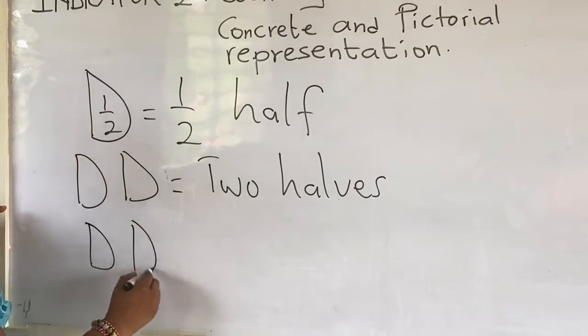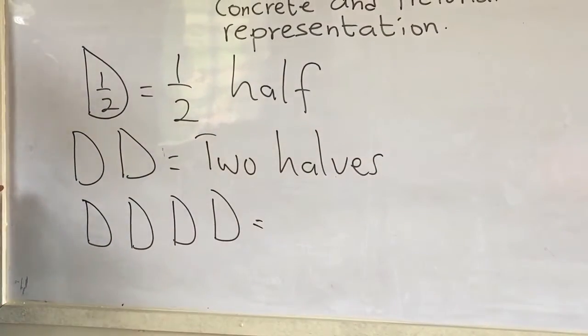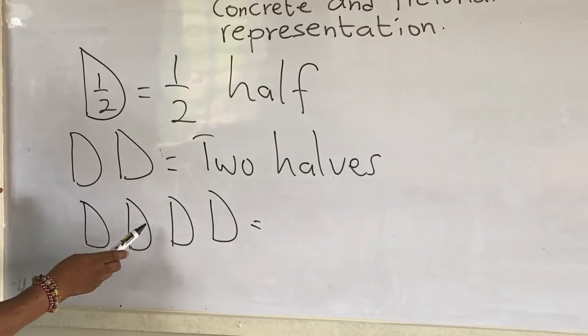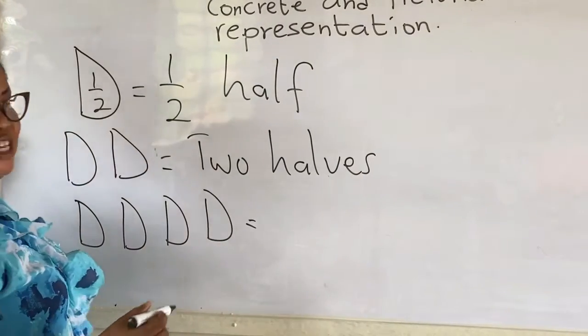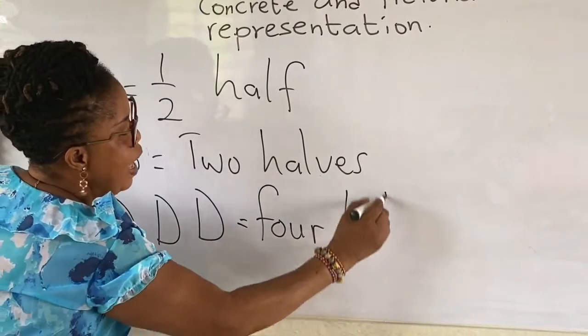Now, when we have a lot of halves, we are going to count and see. We have one, two, three, four. And this is written as four halves.